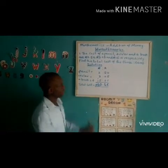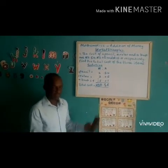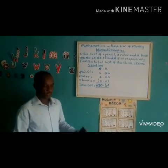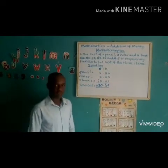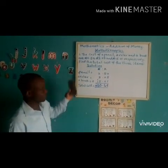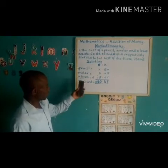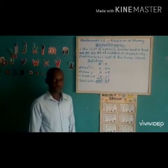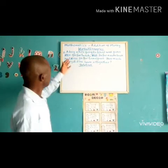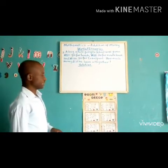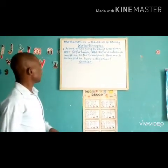This gives you the total amount of money you should have in your pocket when going to the market to buy a pencil, a ruler and a book. We are done with example one. Now let's move on to example two.